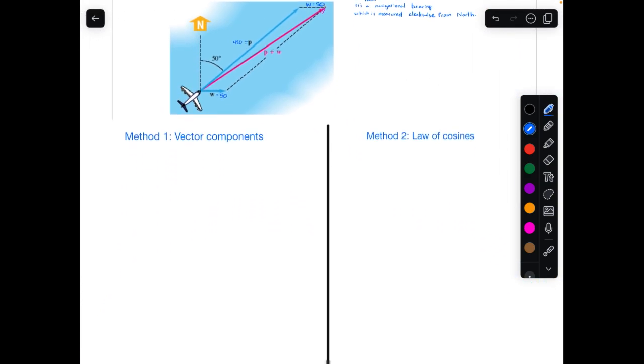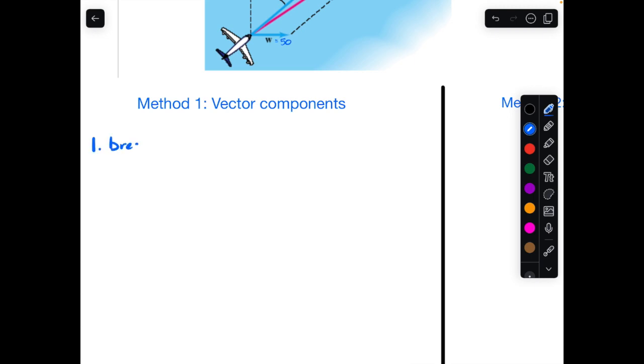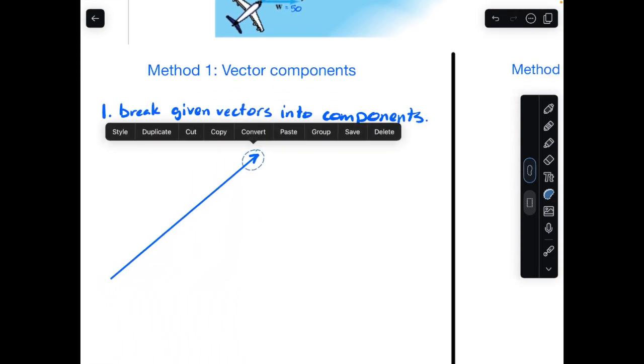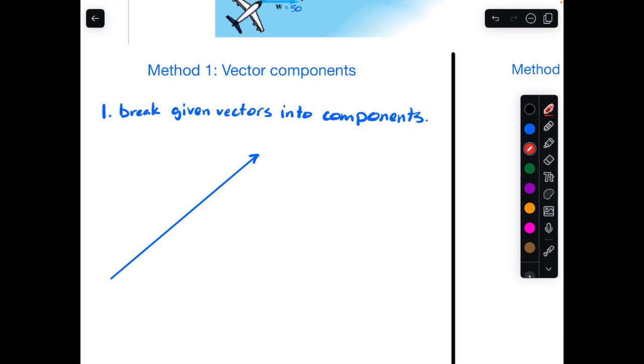Let's go about method one first. Method one uses vector components to solve the problem. To my mind, it has three primary steps. For step one, I want you to break any and all vectors into their components. What I mean by that is, for instance, start with the plane vector P, and bring it down into your workspace, and give me a horizontal component. This is a horizontal and a vertical line. It's got to be a right triangle.